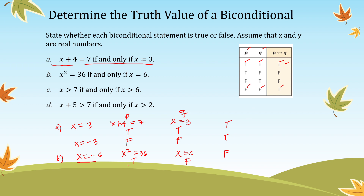This is a false statement because when we let x = -6, P is true and Q is false. Based on the truth table, true and false gives a false result for the biconditional statement.